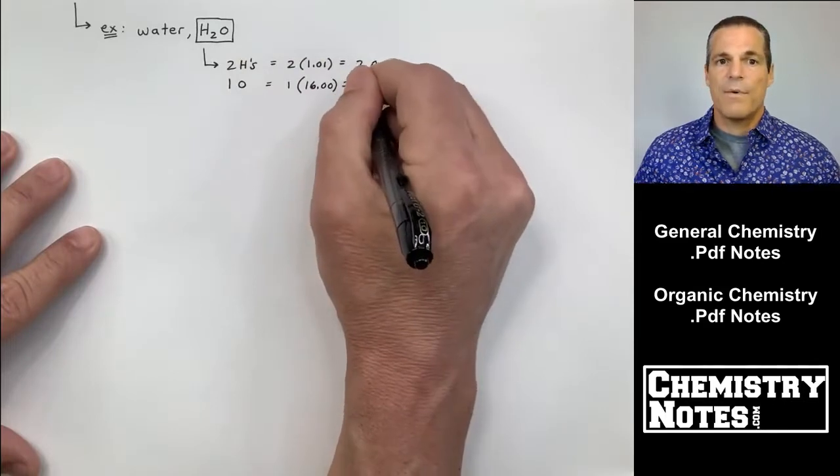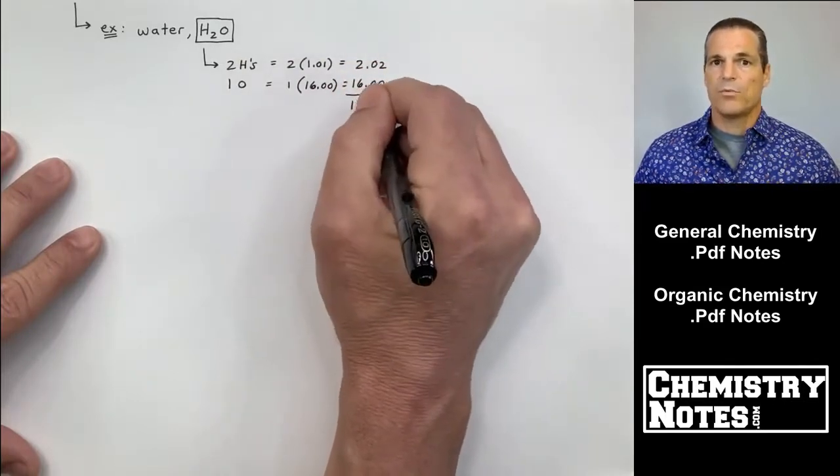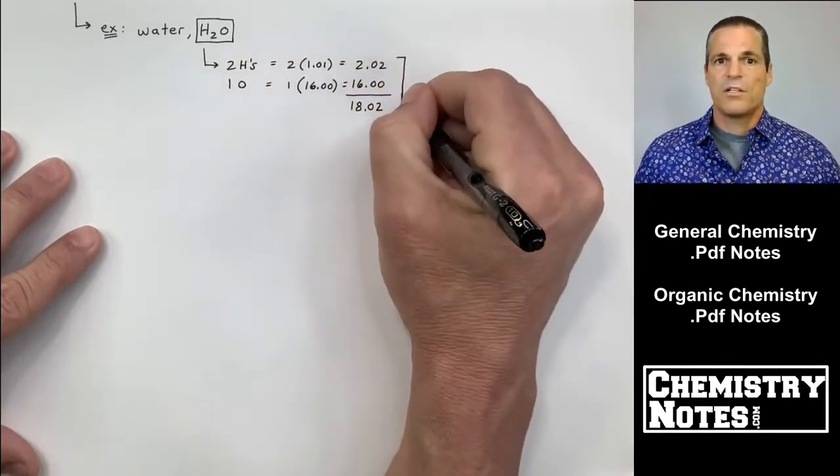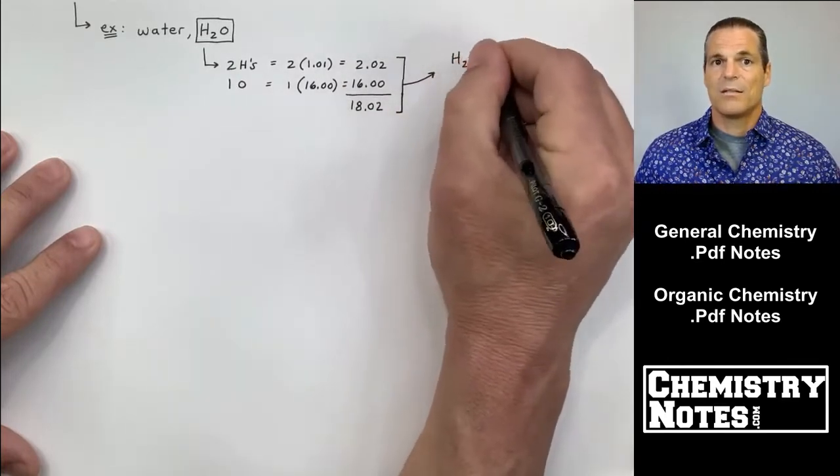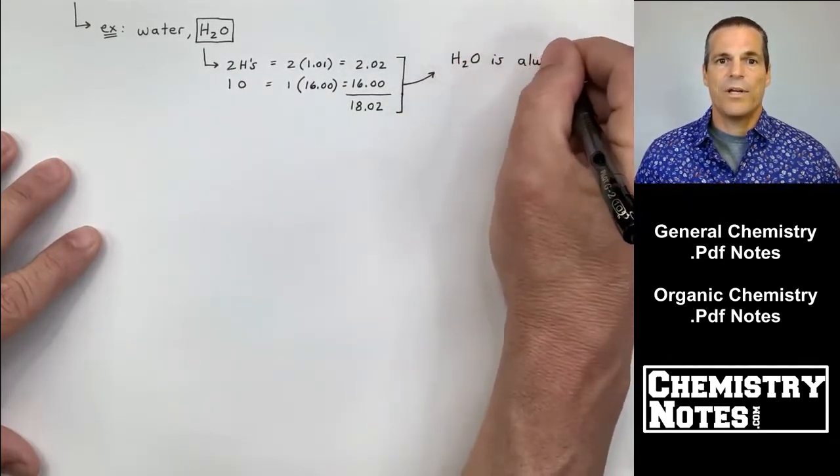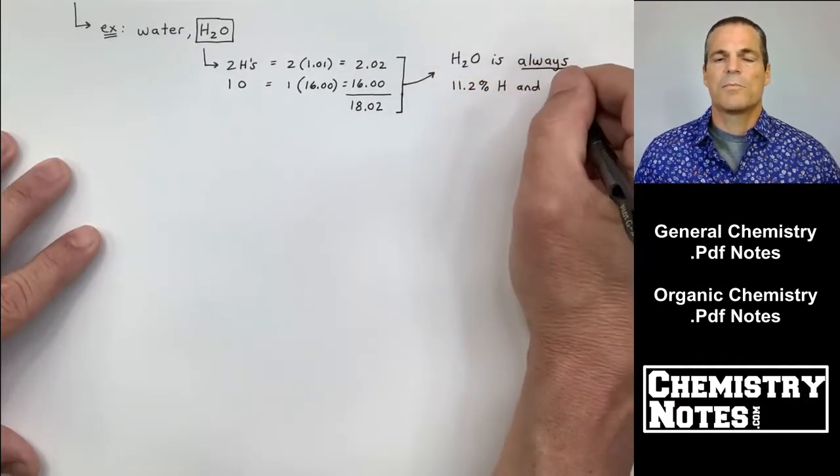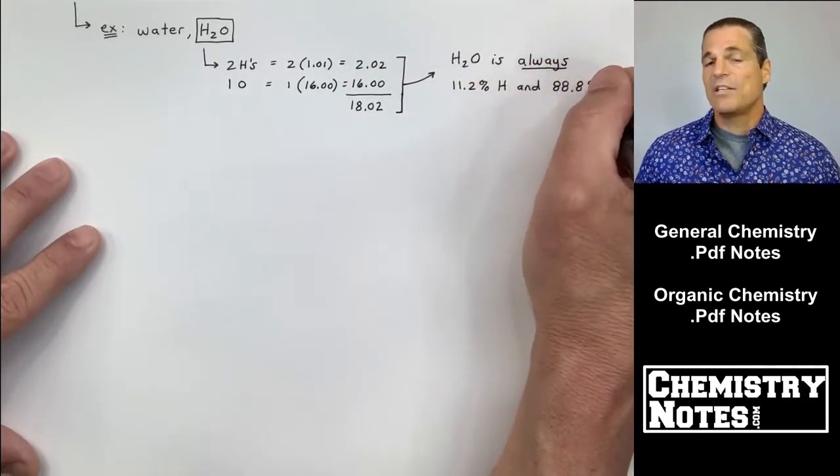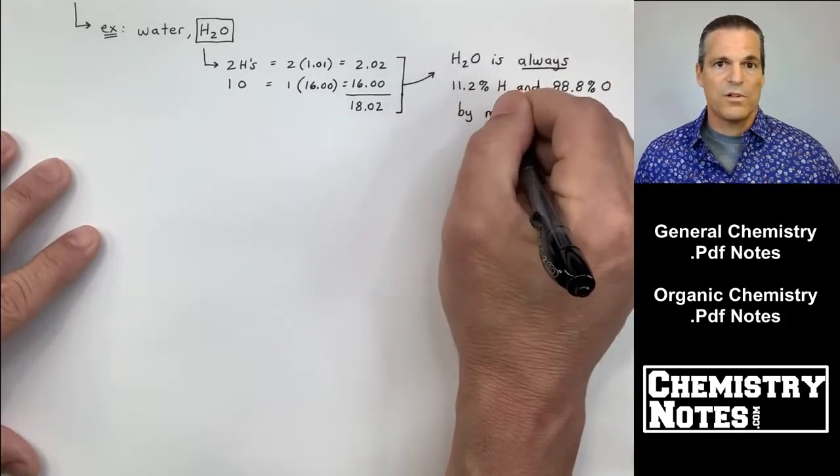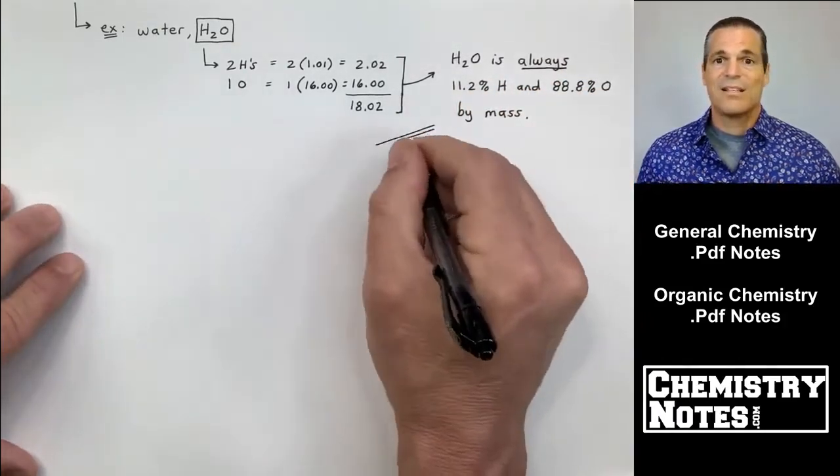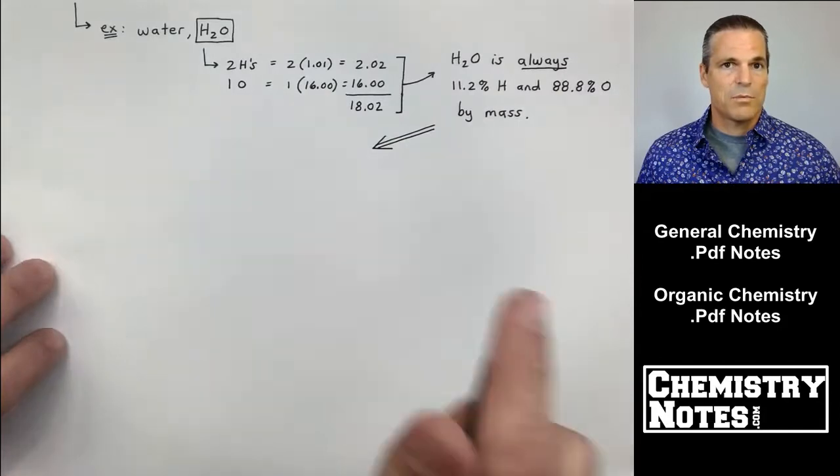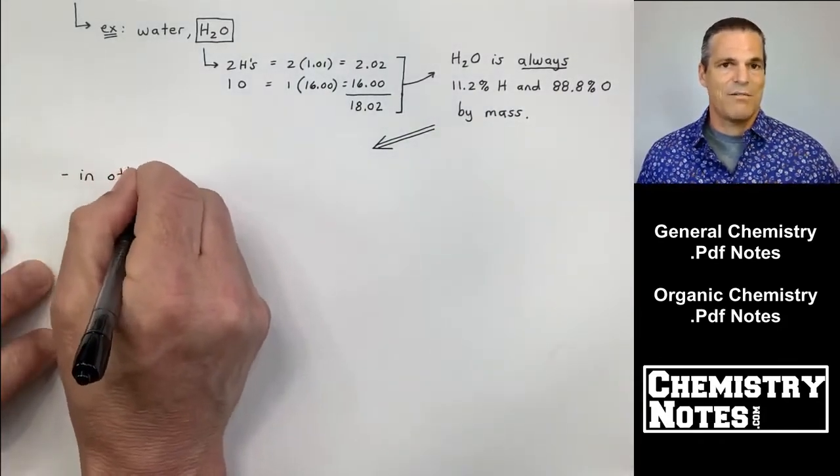In that one definite compound, there's always a ratio of two hydrogens to one oxygen by mass. So if you look up hydrogen on the periodic table, it weighs 1.01. Oxygen on the periodic table weighs 16. So of that 18.02 total mass, hydrogen is always responsible for 11.2% of that mass. Oxygen is always responsible for 88.8% of that mass.